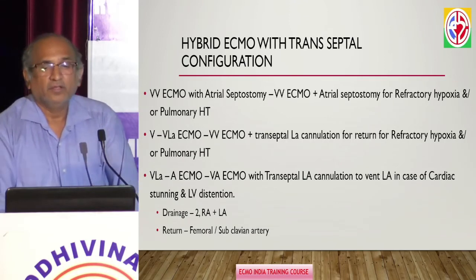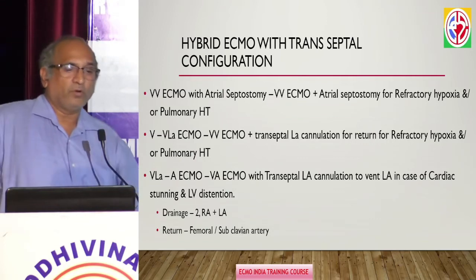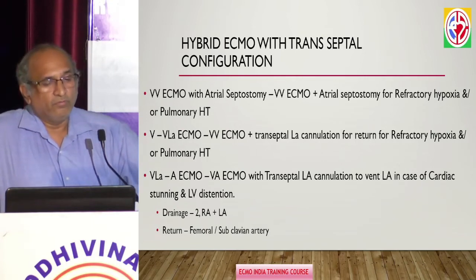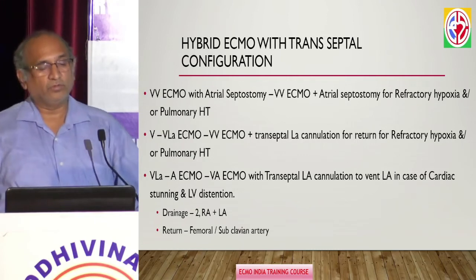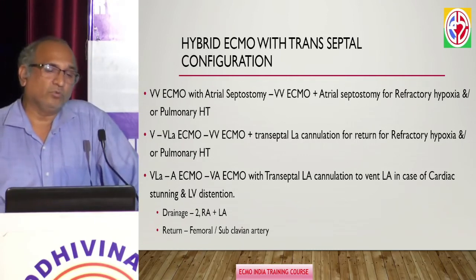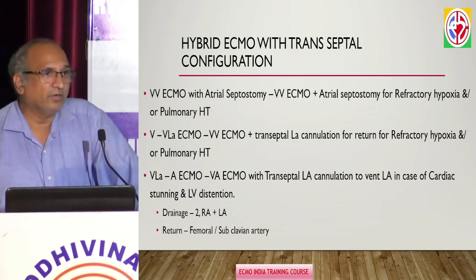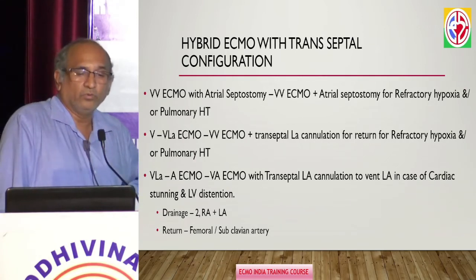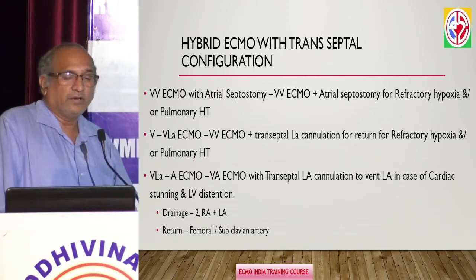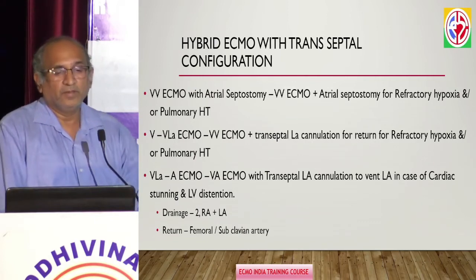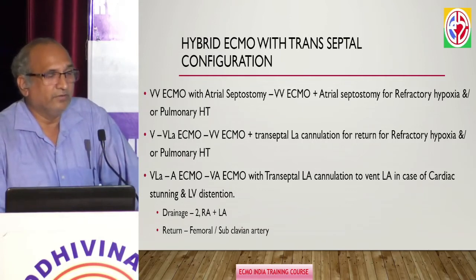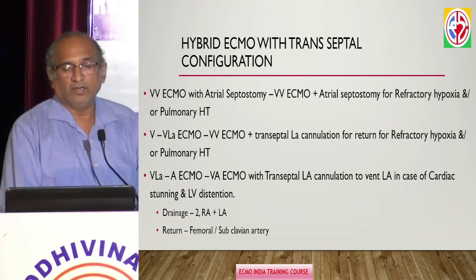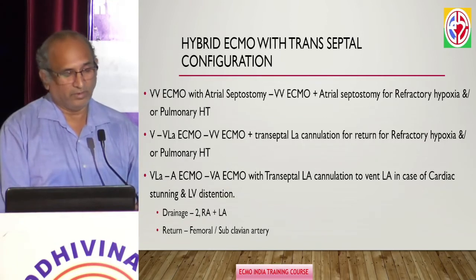You can have VV ECMO with atrial septostomy for refractory hypoxia or pulmonary hypertension — converting to VV ECMO with one return limb going to the left atrium, bypassing the right heart. In refractory hypoxia, pulmonary hypertension, or right heart failure, you can also do this combination. Or you can drain from both the vein and the left atrium and return to the artery — in cases of cardiac stunning or LV distension on VA ECMO — putting an additional drainage from the left atrium to help vent the LV.